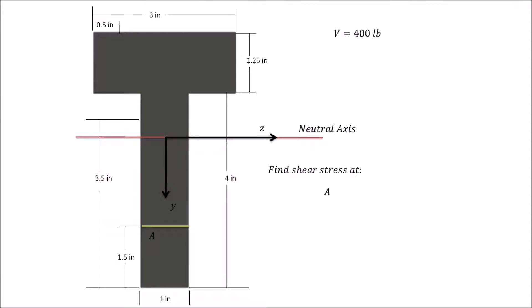We will look at cut A, 1.5 inches up from the base of the web; cut B, located 3.5 inches from the base of the web; cut C, located at the joint of the flange and web; cut D, located on the top side of cut C; cut E, a vertical cut 0.5 inches from the left-hand side of the flange; and finally cut F down the middle of the flange.